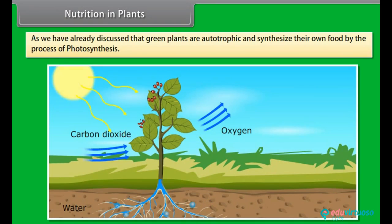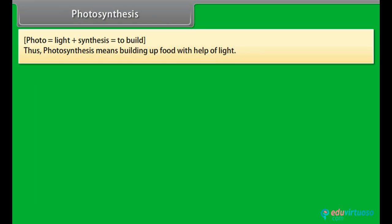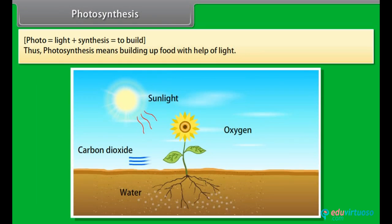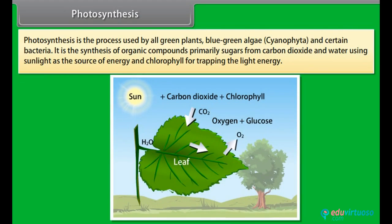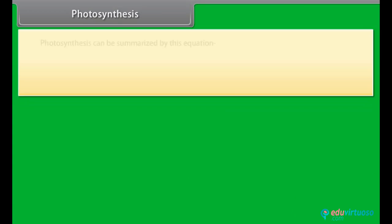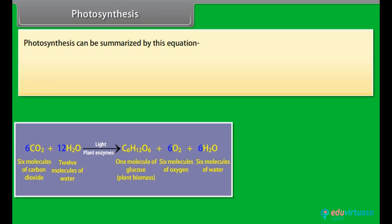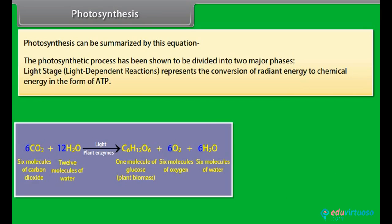Green plants are autotrophic and synthesize their own food by the process of photosynthesis. Photo means light and synthesis means to build, so photosynthesis means building up food with the help of light. Photosynthesis is the process used by all green plants, blue-green algae, cyanophyta, and certain bacteria. It is the synthesis of organic compounds — primarily sugars — from carbon dioxide and water, using sunlight as the energy source and chlorophyll for trapping light energy. Photosynthesis can be summarized by a chemical equation.